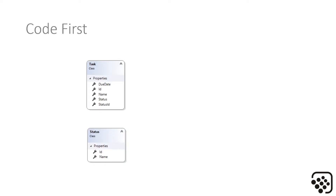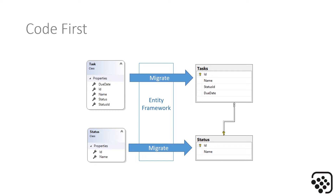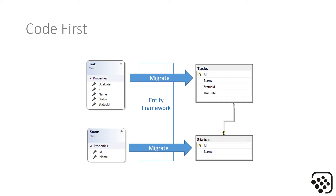Code first versus database first. With code first, you actually start with your application — you design it from the ground up. You think about the classes that your application needs to have, in particular the classes that need to be persisted to a database. In our instance, we start with our task class and our status class. Then, using Entity Framework, we do what's called a migration. Entity Framework takes any classes that you tell your DB context class to control, migrates them to the database, and actually creates an associated schema for us — and it then maintains that relationship.